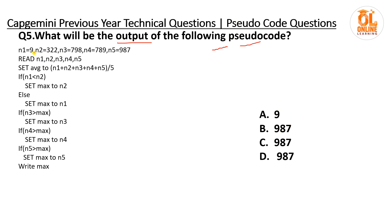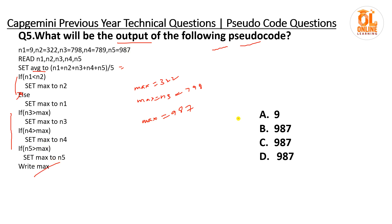Next question: find output with n1, n2, n3, n4, n5. Check if n1 <= n2: yes, so max equals n2 (322). Then if n3 > max: 798 > 322, yes — max set to n3 (798). If n4 > max: 789 > 798? No. If n5 > max: 987 > 798? Yes — max set to n5 (987). Print max gives 987 — option B is the correct answer.